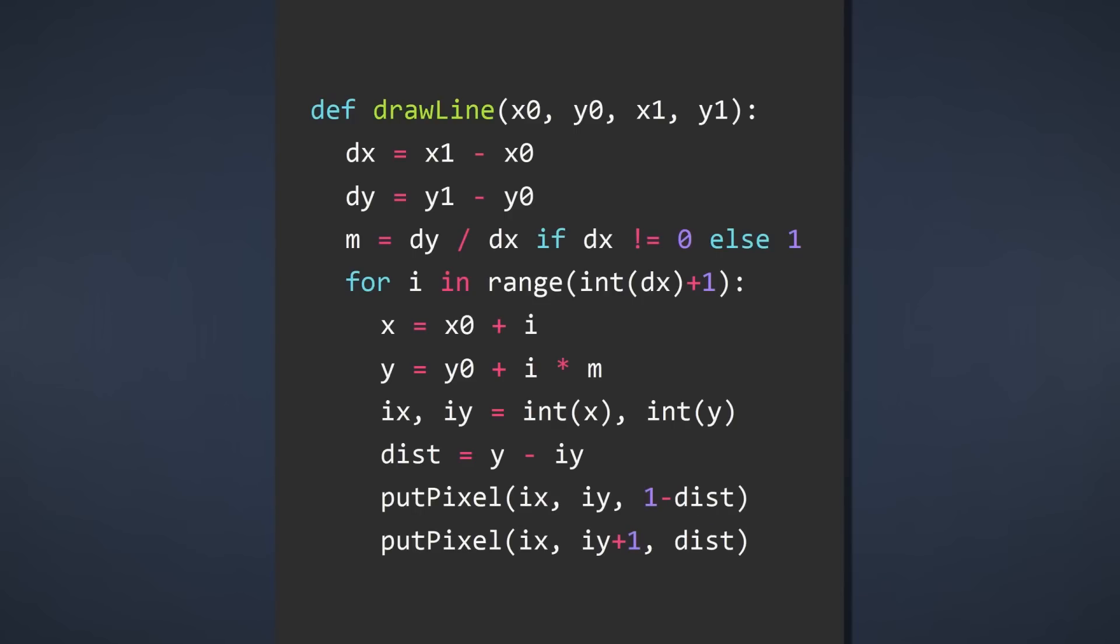For the top pixel, it is 1 minus the distance, and for the bottom pixel, it's simply the distance. And that's all. We now have a pretty good implementation of the algorithm that draws an anti-aliased line.